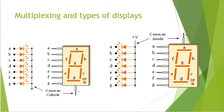Let's talk about multiplexing and the types of displays. Essentially, there are two types: the common cathode type and the common anode type. In the common cathode type, all the cathodes of the 7-segment display are connected directly together and joined to logic 0 or ground.